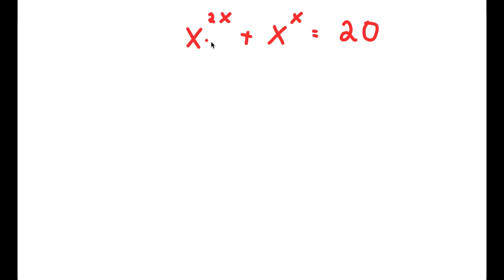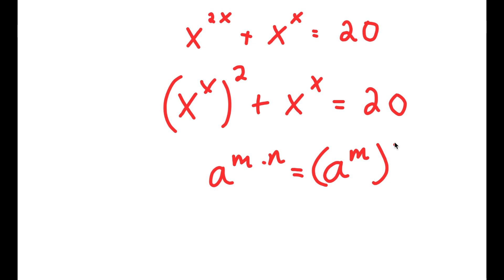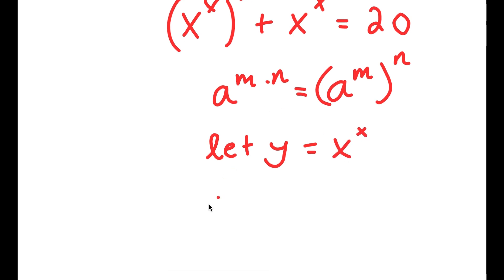To solve this, I'm going to first rewrite x to the power of 2x as x to the power of x to the power of 2. I can do this because if I have something in the form a to the power of m times n, this is the same thing as a to the power of m to the power of n. So now I'm going to let the variable y equal x to the power of x, giving me y squared plus y is equal to 20.